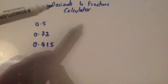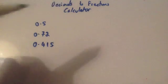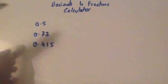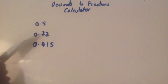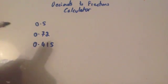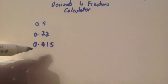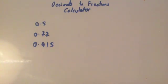In this video we're going to look at how to convert from decimals to fractions using your calculator. We're going to start off by doing 0.5. Obviously we know 0.5 is a half, but I just want to show you how to do it in your calculator, and then 0.72 and 0.415.